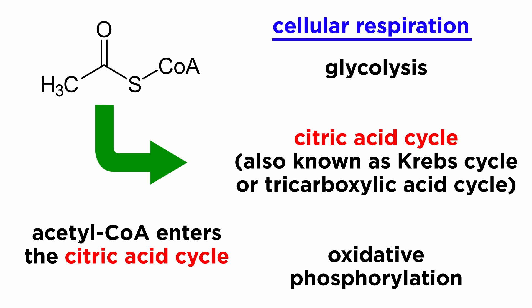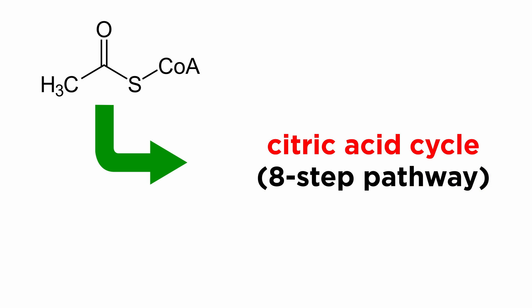Acetyl-CoA will then enter the citric acid cycle, also known as the Krebs cycle, or the tricarboxylic acid cycle. This is an eight-step pathway requiring eight separate enzymes.